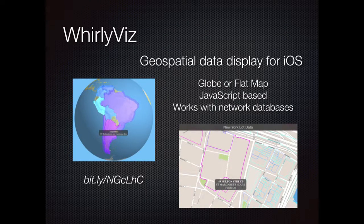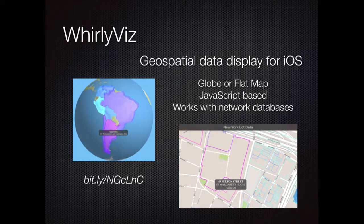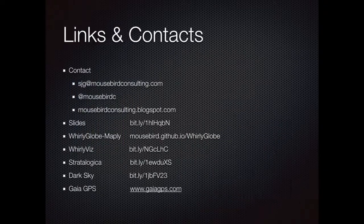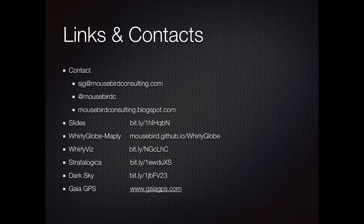Just to mention a little more about that app: it's called WhirlyViz and it's for geospatial data display for iOS only at the moment. It's based on the WhirlyGlobe Maply toolkit, so it'll do a globe or a flat map and you can overlay your own data on top — something you put in a remote database and query against. It's JavaScript-based so it can interface with all sorts of different data sources and display results with native mobile code to make it fast. There are links to WhirlyGlobe Maply and the apps mentioned in this talk.